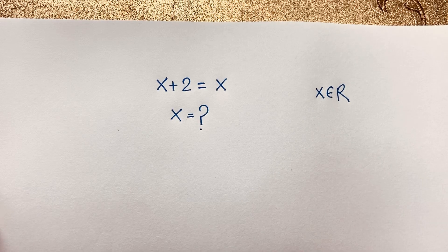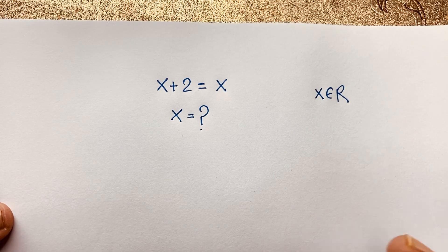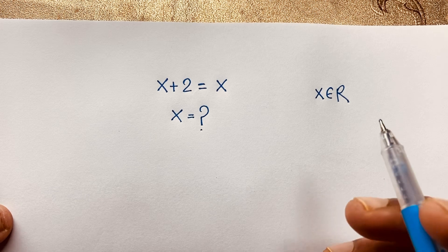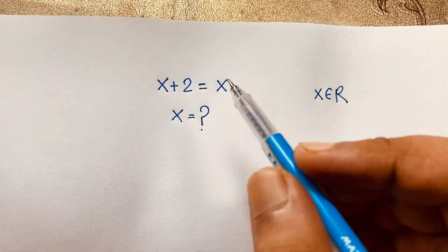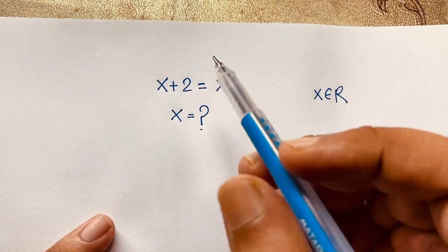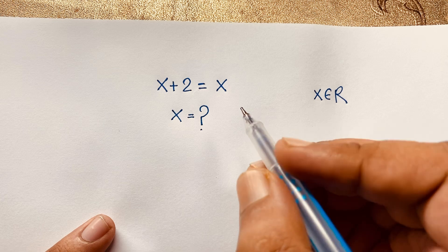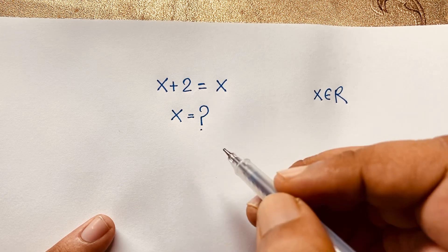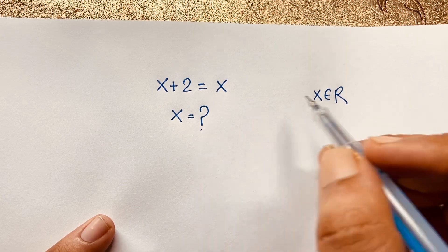Welcome to my YouTube channel. Today we have solved an interesting viral math problem. This is a funny math problem: √(x+2) = √x, where x equals a heart symbol. How do we solve this interesting math problem?